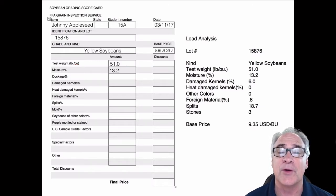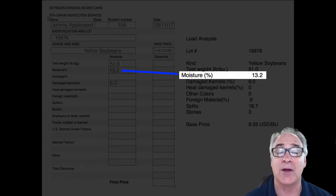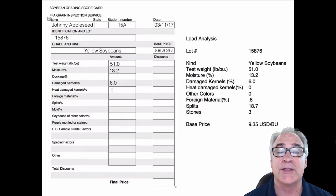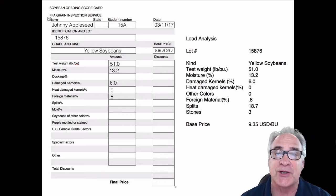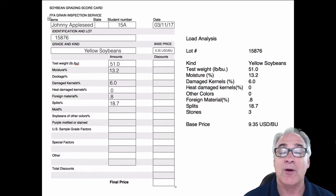And then just go ahead and put each one of those down as it is on the load analysis, like 13.2 percent moisture content, 6 percent of damaged kernels, and so on. Just keep putting them all in the right place. Make sure that you understand that even if it has a zero next to it, you need to put that zero in also in the amounts column as well.